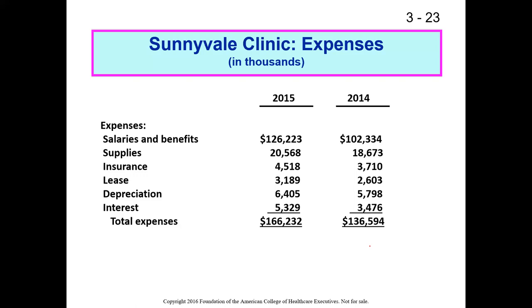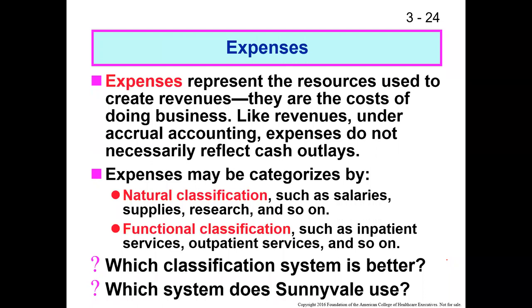Interest expense is the interest the organization is paying on loans — for example, to buy a building or an expensive piece of equipment. The interest portion of loan payments is reported as interest expense; the principal repayment is not an expense, it's just a payback of the amount borrowed. Then we total up all expenses.